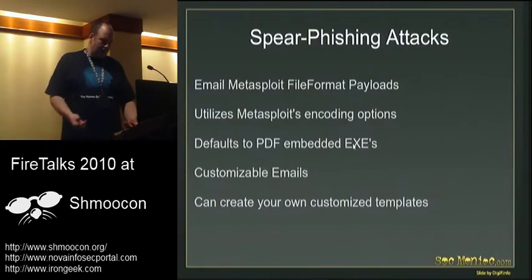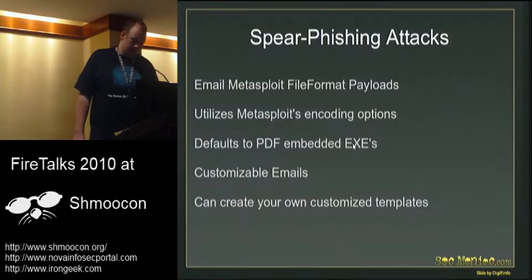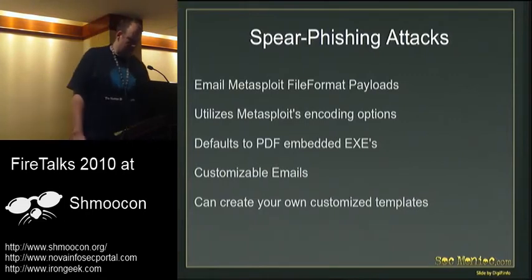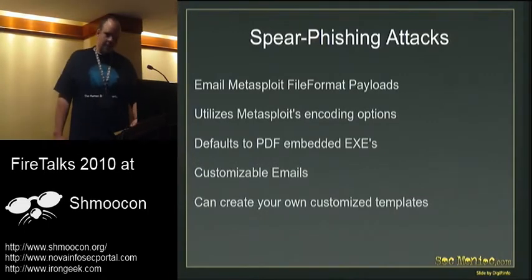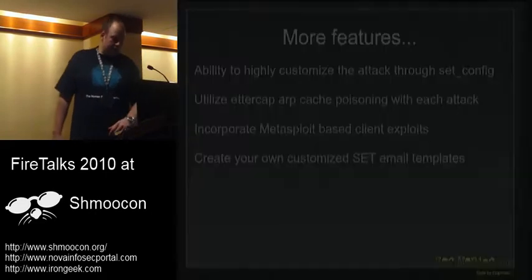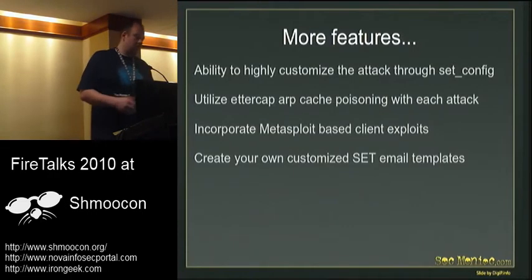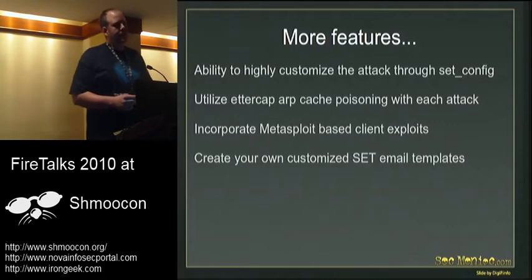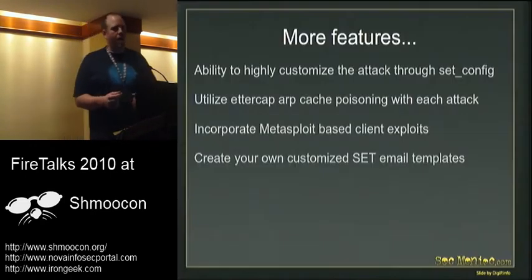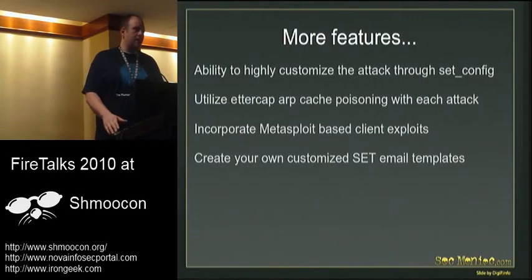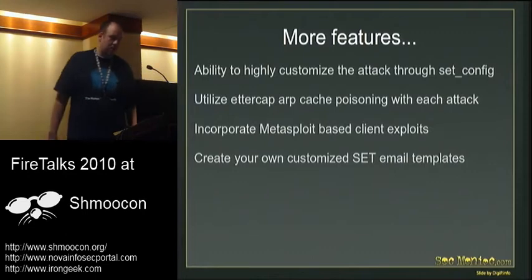A spear phishing attack allows you to email Metasploit file format payload bugs and utilizes Metasploit encoding. The default is the PDF embedded EXE, but you can use whatever one you want — that's the latest and greatest. It dynamically imports them from Metasploit so you don't have to worry about it being updated. Customizable emails let you create your own templates. It also allows you to utilize Ettercap ARP cache poisoning — so if you're doing the web attack, it'll ARP cache individuals, replace all the hrefs on whatever sites they're visiting, automatically inject into that, and redirect to your malicious site.